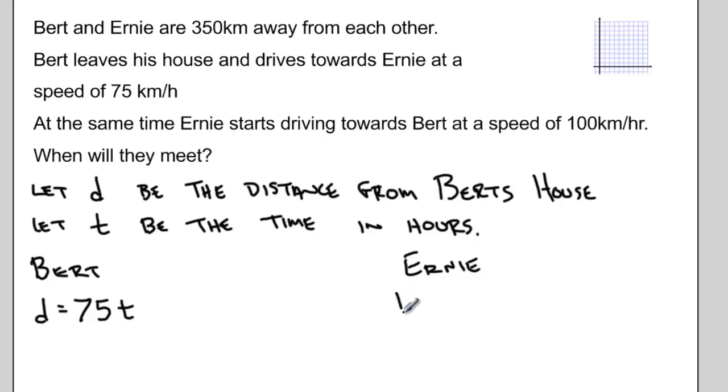Ernie, on the other hand, already starts 350 kilometers away from Bert's house and is driving towards Bert. So as time goes by, the distance from Ernie to Bert's house decreases by 100 kilometers per hour. Ernie's equation is D = -100t + 350.